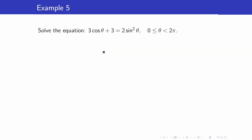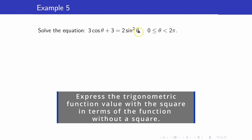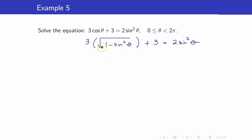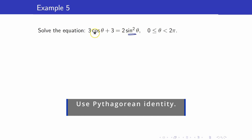Next, let's have 3 cosine theta plus 3 equals 2 sine squared theta. Notice you have two trigonometric functions: cosine and sine, where sine is squared. My technique is to always express it using the trigonometric function without the square — meaning I will express sine squared theta in terms of cosine theta. If instead we expressed cosine in terms of sine, we would end up with a square root, which takes longer to solve. Hence, I replace sine squared theta by 1 minus cosine squared theta.